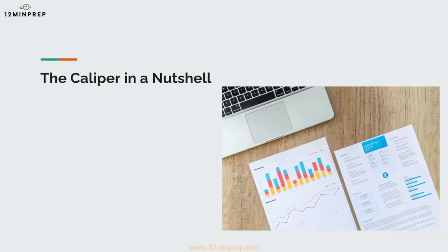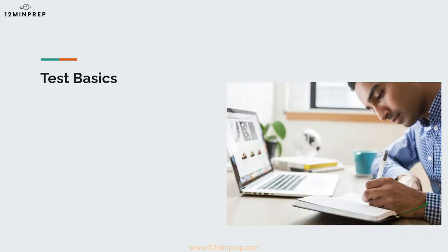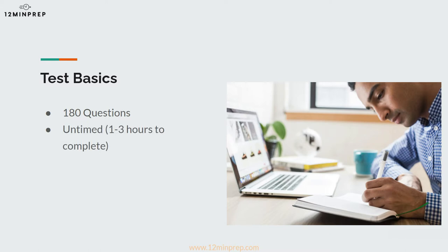The Caliper Profile is a multiple choice assessment that is used to measure both cognitive and personality traits, which are said to be predictors of job performance. The assessment contains 180 questions and is untimed. Caliper states it usually takes about an hour to complete; however, some test takers report that it may take as long as 2 or 3 hours. It can be administered online or with pen and paper, and employers can choose whether or not to proctor the test.